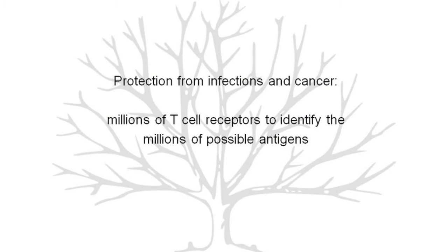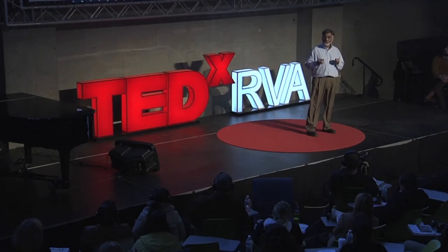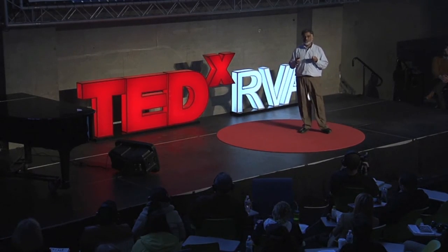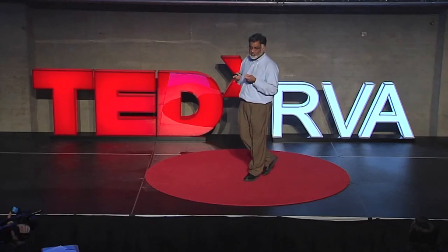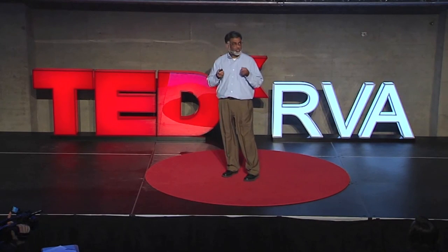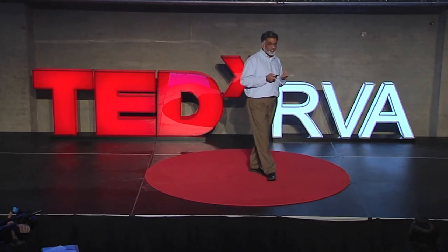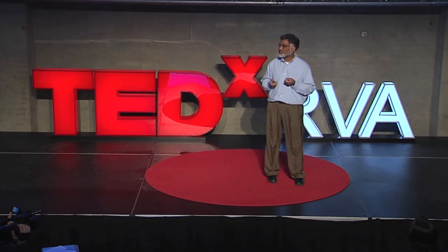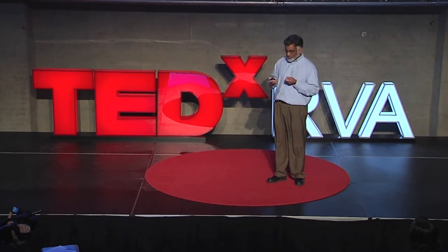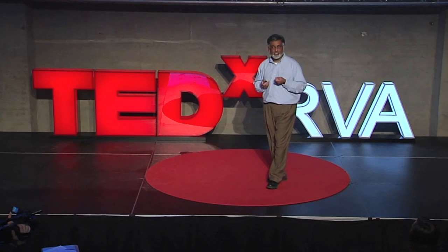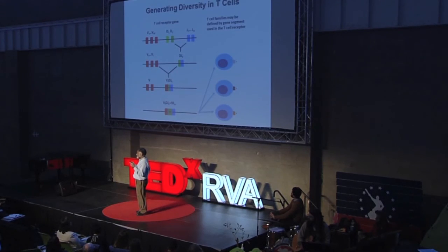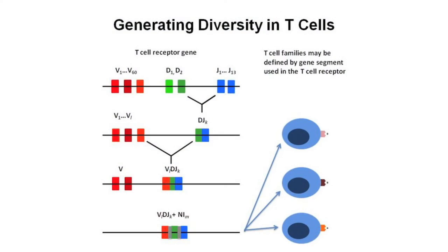As one goes through one's lifetime, one encounters hundreds of thousands of different kinds of bacteria. There might be mutations which might cause many different kinds of antigens to develop and come up. How is it that the human immune system is able to develop this vast repertoire of immune system cells — T cells — which combat these infections? The answer is that evolution has given humans, actually all mammals, this marvelous apparatus called the T cell receptor gene.